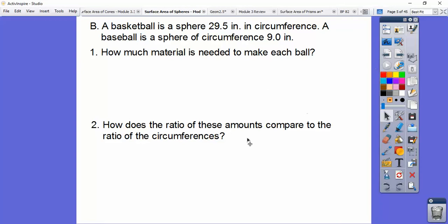And after we do that, how does the ratio of these amounts compare to the ratio of the circumferences? So here's the circumferences up here. The ratio of the circumferences are 29.5 over 9.0. Ratio is code word fraction.